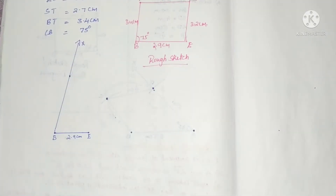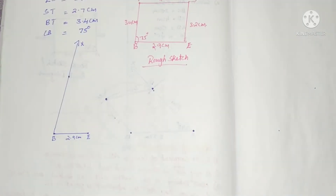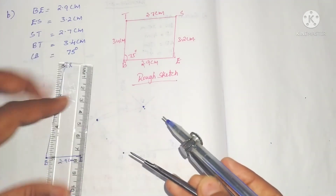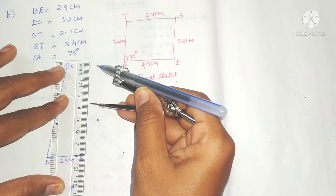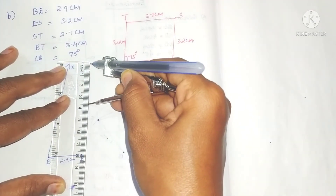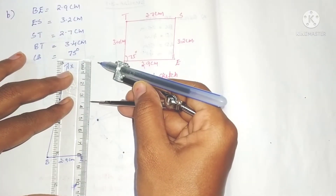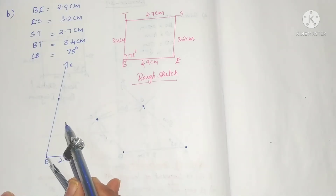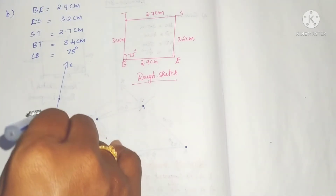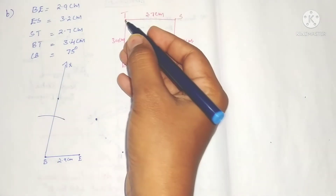Now BT is 3.4 centimeters. Take the scale and measure 3.4 centimeters with the compass. Taking B as center, draw an arc on the ray BX. The point of intersection of the arc and the ray is vertex T.